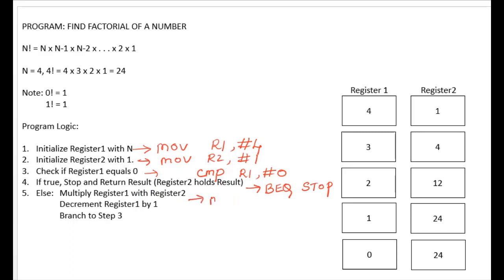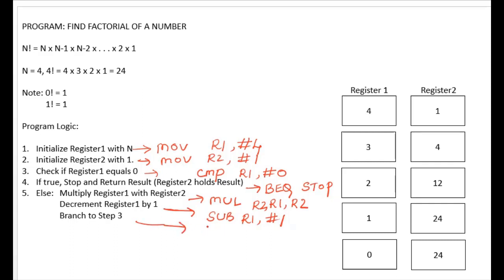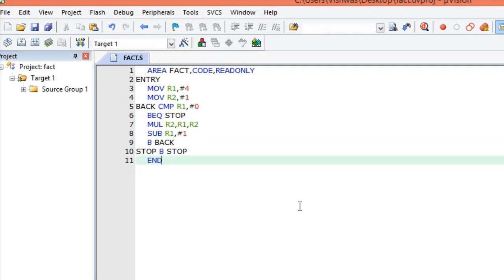Otherwise, we perform multiplication using the MUL instruction — register 1 content multiplied by register 2, result stored in R2. This is a three-operand instruction. Next, we decrement R1 by 1 using subtraction. Then we unconditionally branch back using instruction B to the comparison step, which has a label called 'back'. So the branch instruction is: B back.